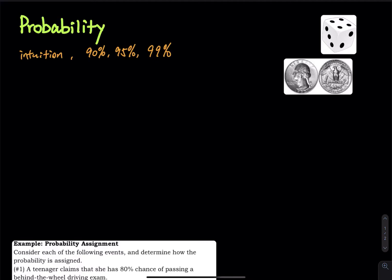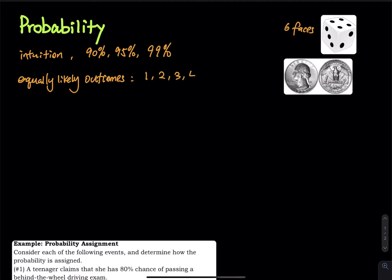And then the next type is based on equally likely outcomes. Do you see there are two pictures on the right? The first one is a die and the second one is a coin. So let's say I roll a die. A die has six faces. What kind of numbers do you get every time you roll a die? You get a one, two, three, four, five, six — there are six faces. What is the probability that you get either one of these faces?